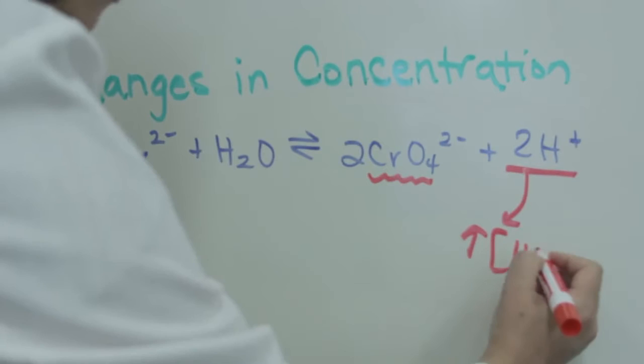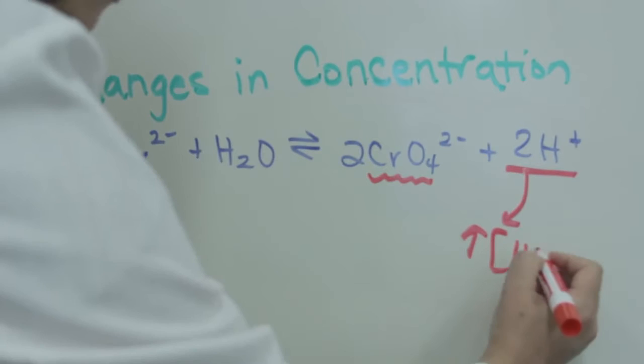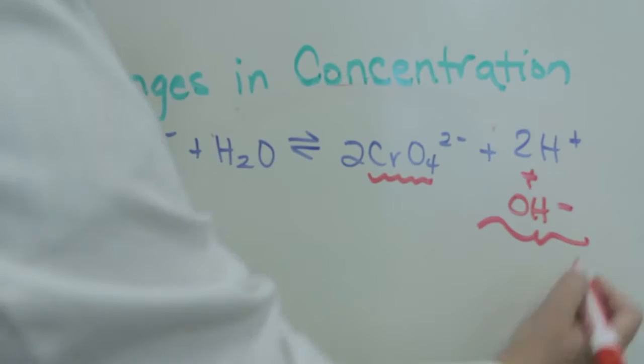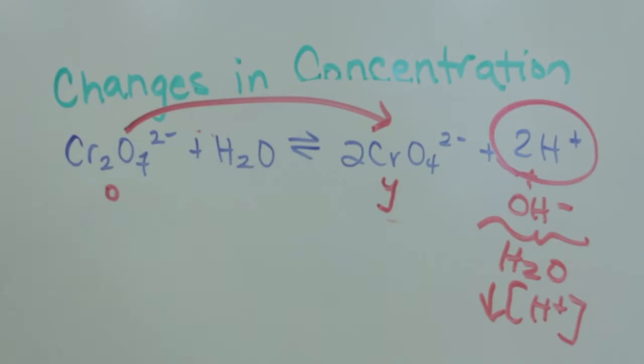In the first example we added H+, which increased the concentration of the H-plus ions in the equilibrium. This stress caused the equilibrium to shift left. Next we added OH- which reacted with the H+, and lowered the concentration of the H+, causing the equilibrium to shift to the right.